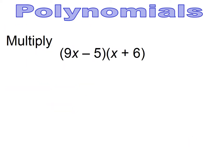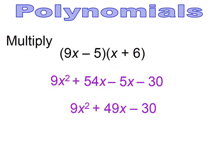Pause and try. So you have 9x times x giving us 9x squared. 9x times 6 gives us plus 54x. Then minus 5 times x gives a minus 5x, and minus 5 times positive 6 gives negative 30. Then combining like terms — plus 54x minus 5x — gives us 49x. So the final answer is 9x squared plus 49x minus 30.